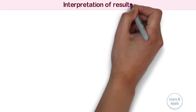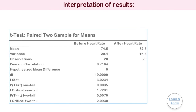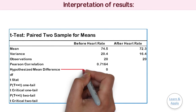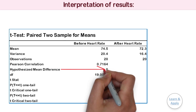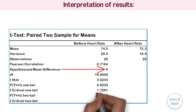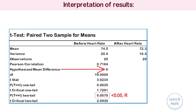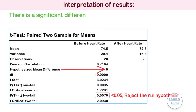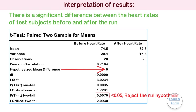Interpretation of results: The interpretation of results is the same as the result from Minitab. The null hypothesis states that the mean difference of the pulse rate is 0. Because the p-value is 0.007, which is less than the significance level of 0.05, the physiologist rejects the null hypothesis and concludes that there is a difference between the heart rates of the test subjects before and after the running program. This is all about the paired t-test in Microsoft Excel as well as Minitab software with the help of a practical example.